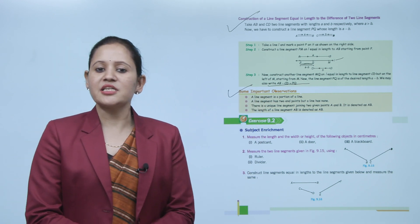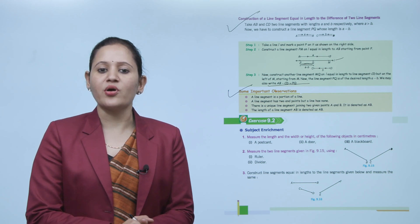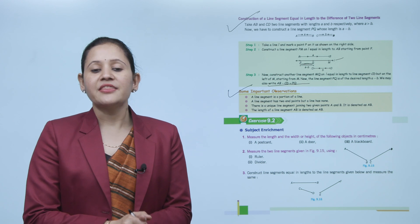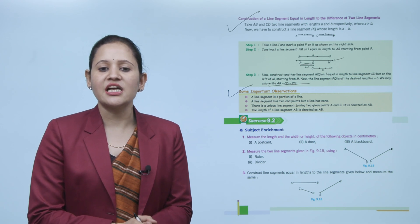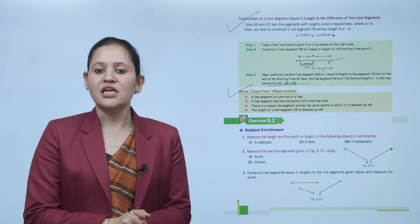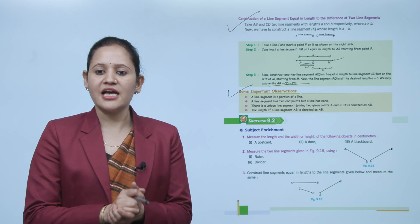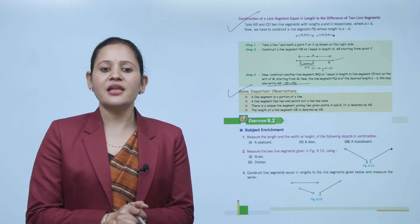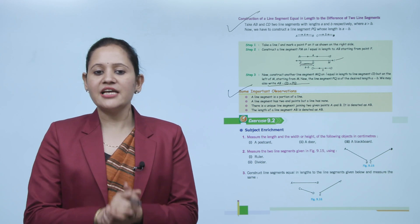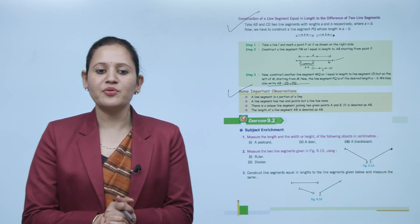Some important observations: a line segment is a portion of a line. A line segment has two endpoints, but a line does not. There is a unique line segment joining two given points A and B, denoted as AB. The length of line segment AB is also denoted as AB.